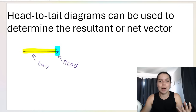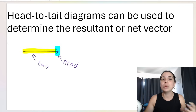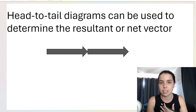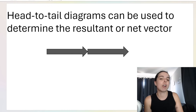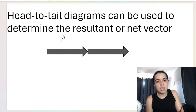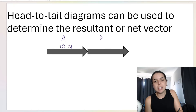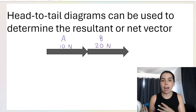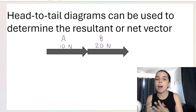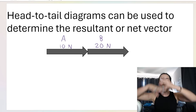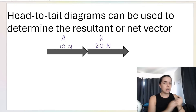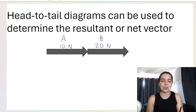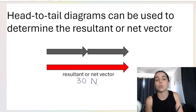The head to tail diagram is named that way because of how we draw it. For example, this could be a head to tail diagram representing two people pushing the same box — person A pushes with 10 newtons to the right, person B pushes with 20 newtons to the right. So overall the net force is 10 plus 20, which is 30 newtons to the right — that's the resultant or net vector.